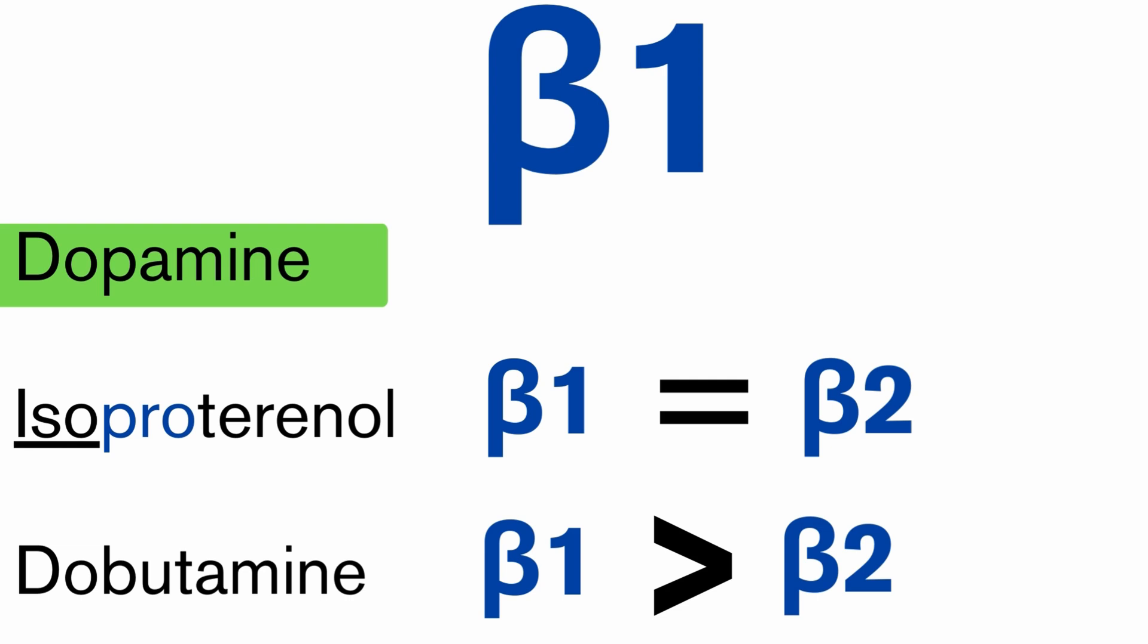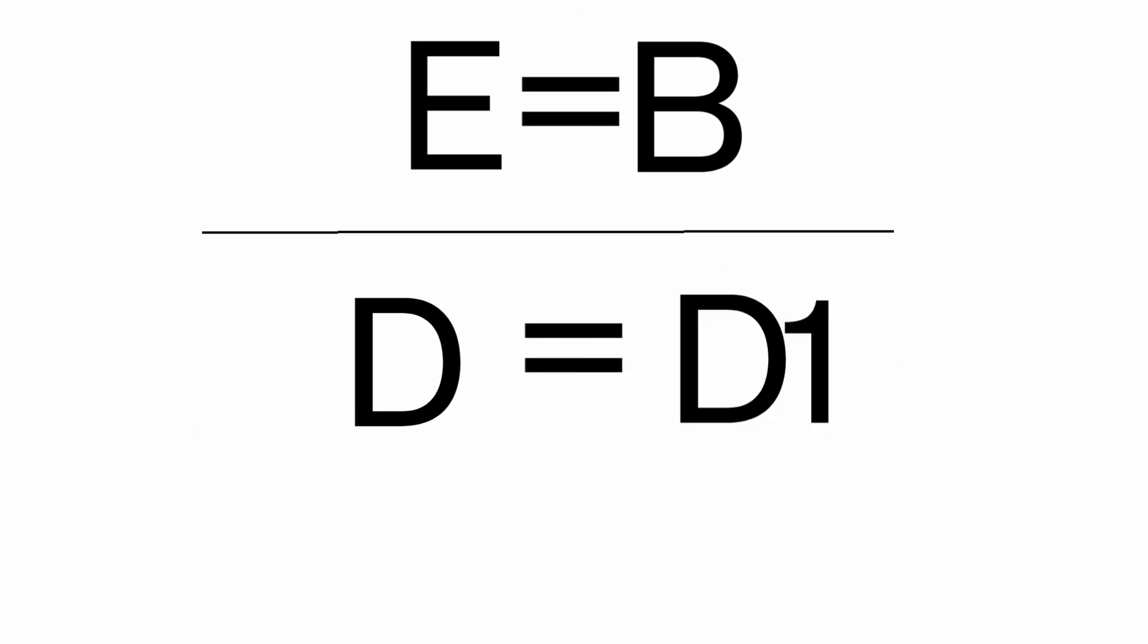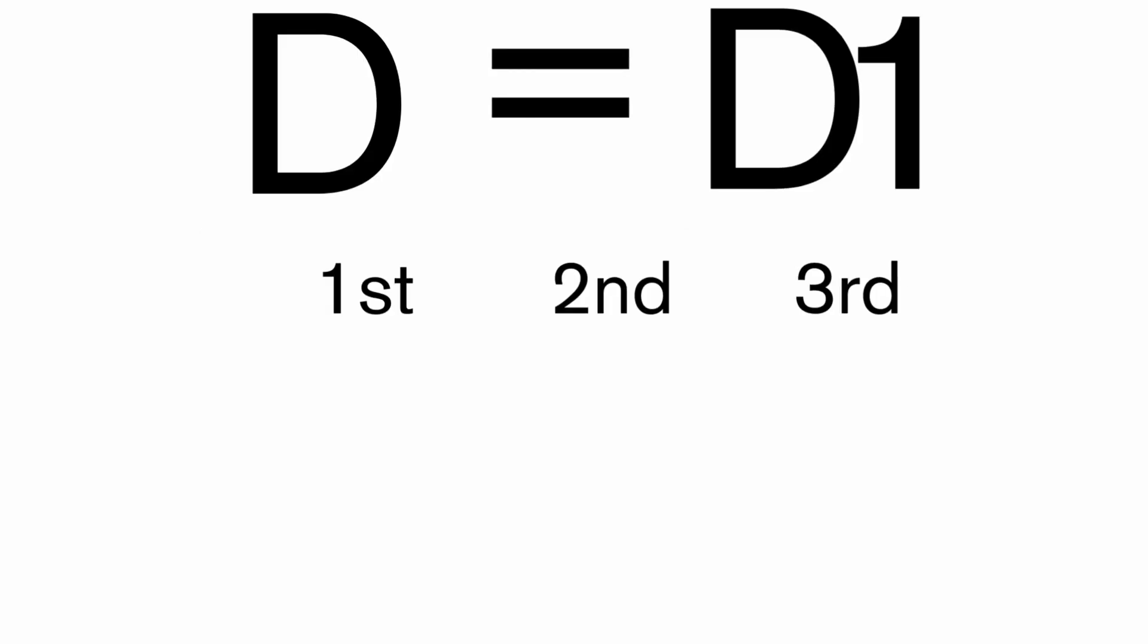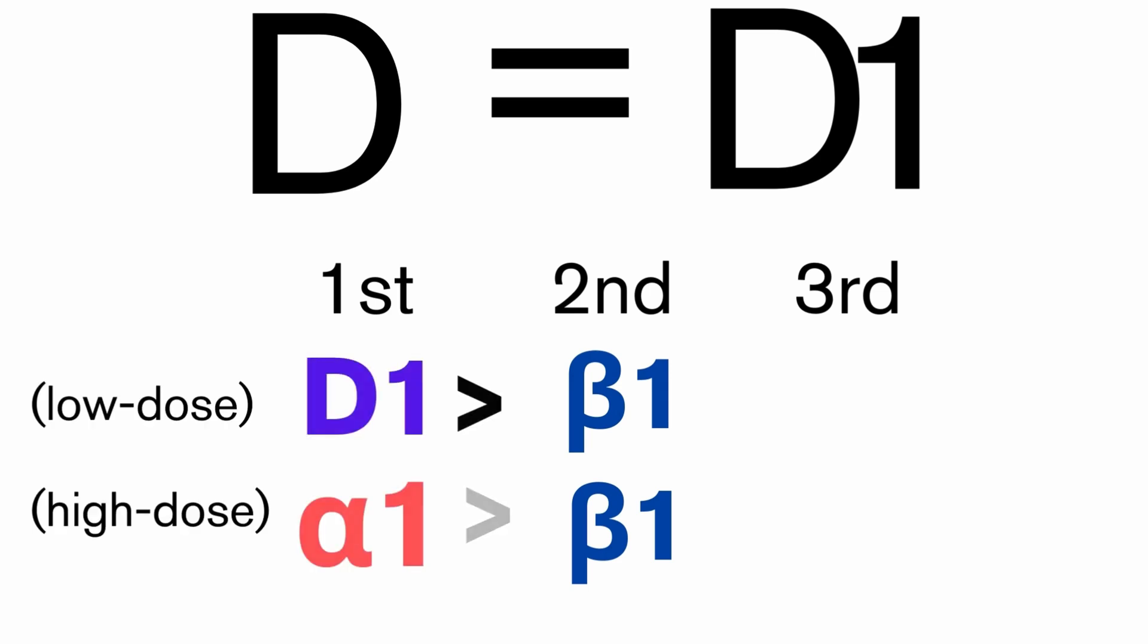And then we have the big exception here, dopamine. So just like we said before, epinephrine originally wanted to bind beta. At higher dosages, it binds alpha one. So dopamine originally wants to bind dopamine, D1. But at higher dosages, dopamine will bind alpha. It'll have higher affinity for alpha one.